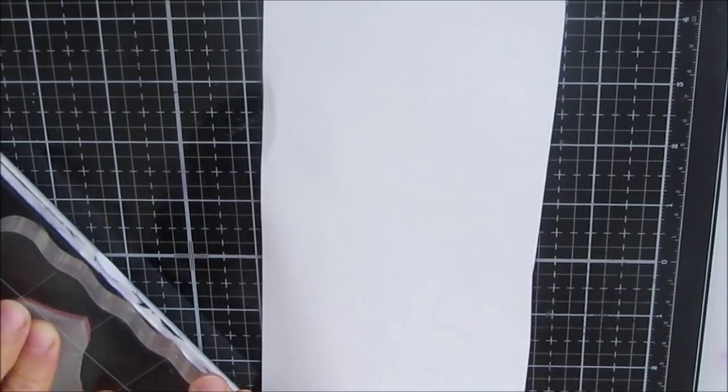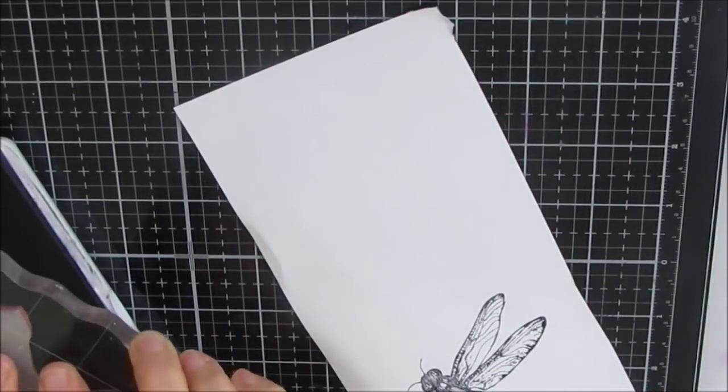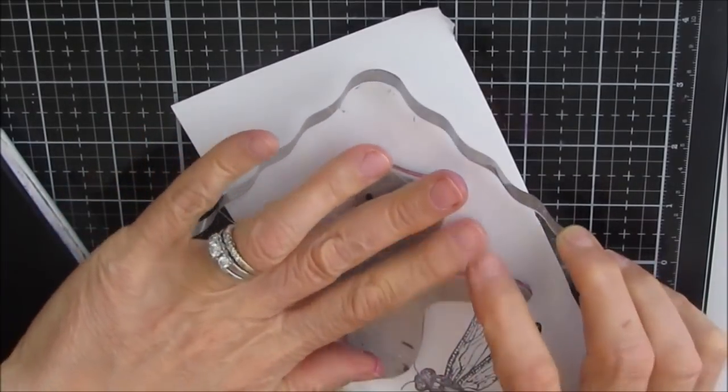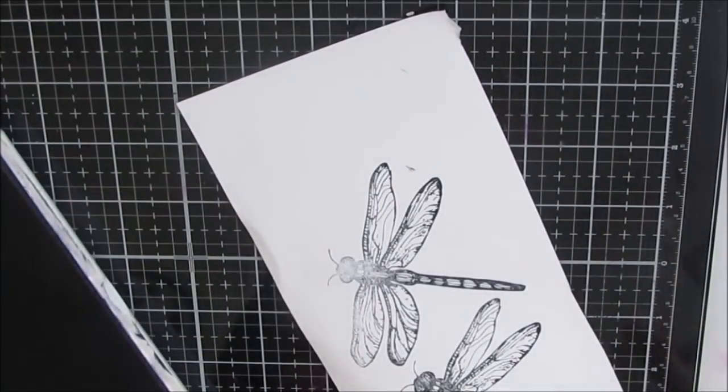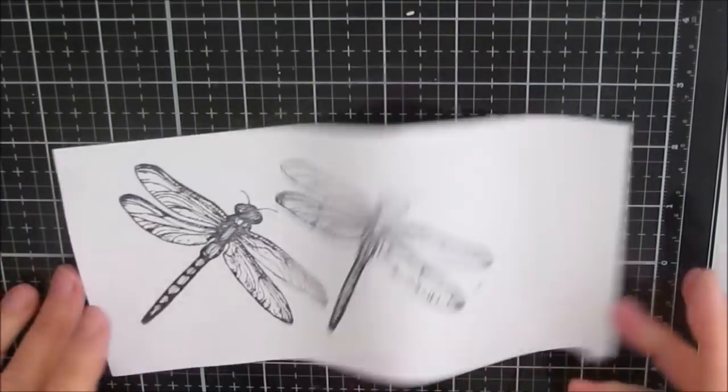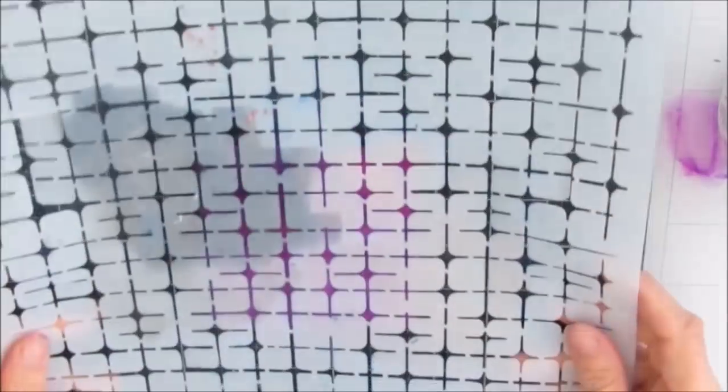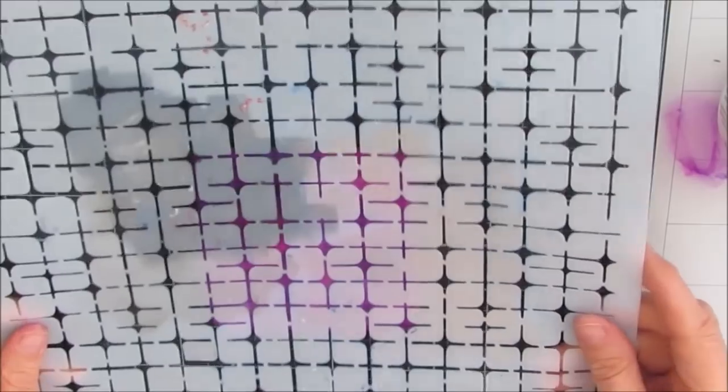It's a dragonfly stamp. My quote says, don't trip over what's behind you. The dragonfly symbolizes transformation in perspective, as well as some other things. So I thought that was fitting, and I'm making this for someone. I'm going to stamp that and colorize it.